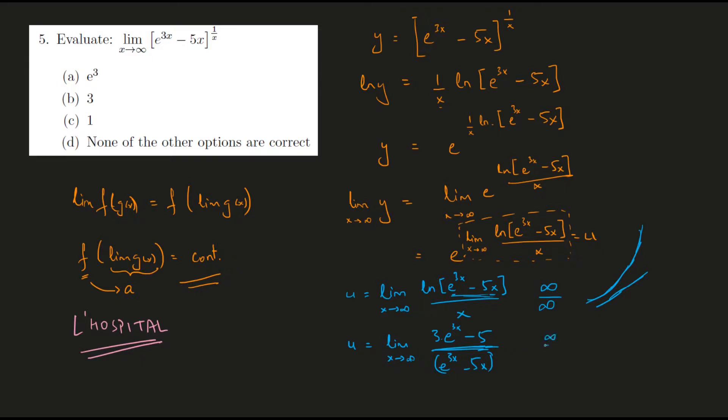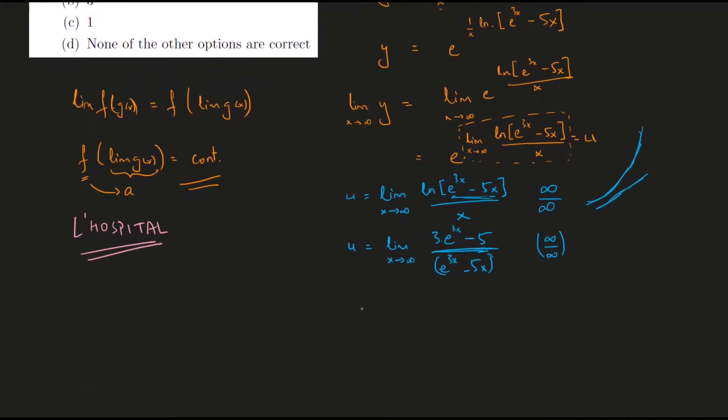Now if you observe again, it is again of the form infinity by infinity. And invoking L'Hospital again, we would get e to the power of 3x upon 3 into e to the power of 3x minus 5. The reason why I knew that I would have to keep applying L'Hospital is because I saw here that I have some terms which are linear and then some terms that have an exponential.